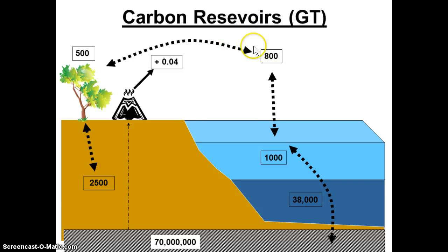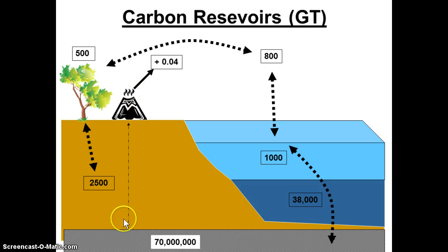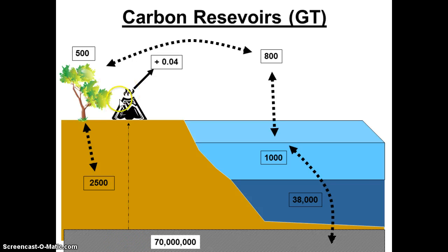So where did the carbon come from, especially in the atmosphere? It's actually from volcanoes — what we call volcanism or outgassing. For millions, even billions of years, outgassing from volcanoes, which comes from the cooking of bedrock — our core's heat melts and rises up, forms volcanism — and we talked about those dynamics in plate tectonics. This vents gases out, and for billions of years has been putting about 0.04 gigatons of carbon into the air per year.